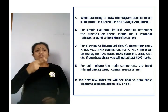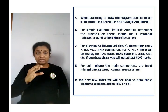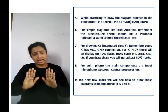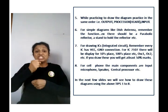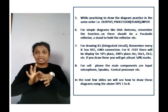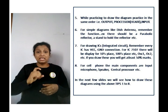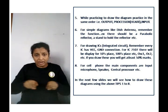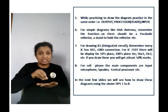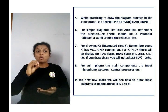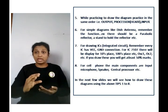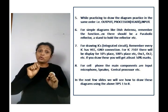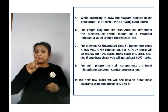Seven, for drawing IC integrated circuits, remember every IC has VCC and GND connection. For IC 7107, there will be display for 10's place, 100's place, OC1, OC2. If you draw these, you will get at least 50% marks.